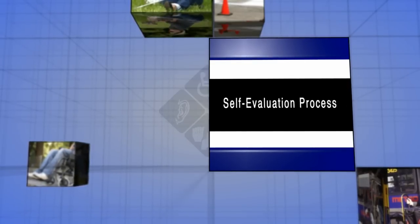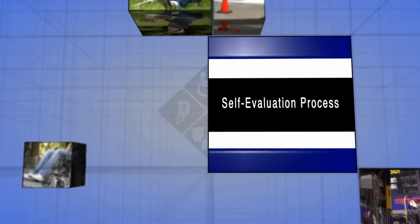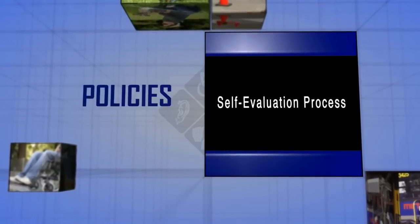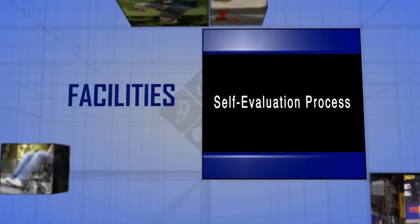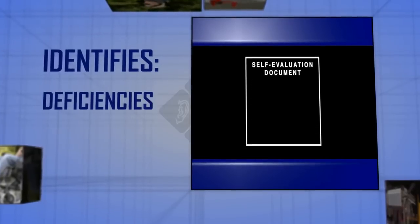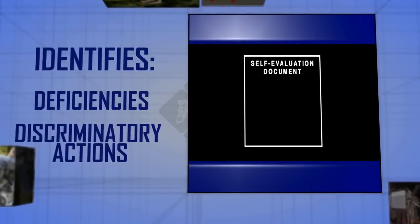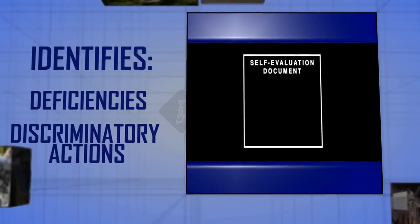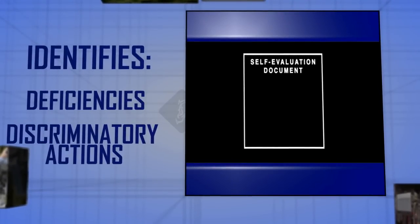The self-evaluation process is the comprehensive assessment of your entity's current policies, practices, services, facilities and public rights-of-way. The findings at the completion of this process are used to create a document that identifies any deficiencies or discriminatory actions that affect people with disabilities and hinder their access to the programs, services and activities offered by your agency.